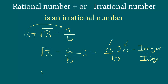In other words, what we have is that square root 3 is a rational number. But we know for a fact that square root 3 is not a rational number, and that means our initial assumption was incorrect.